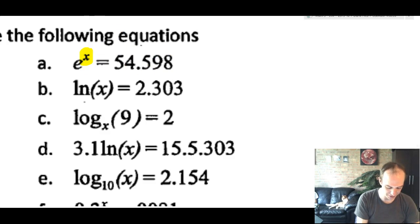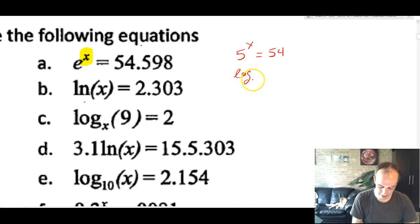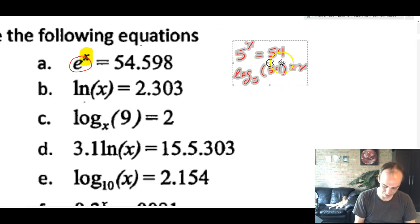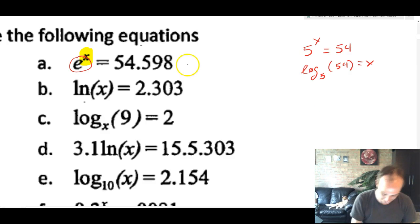Let's approach this one as if we didn't know that e was a special number. If this was just 5 to the x equals 54, we would write it as log base 5 of 54 is equal to x. So e here is just taking the role of that 5. It's not 5 to the x is 54, it's e to the x is 54. So we'll write it like log base e of 54.598 equals x.